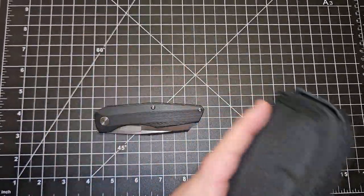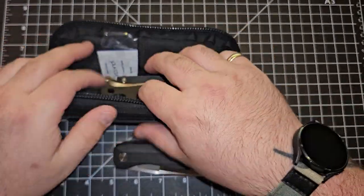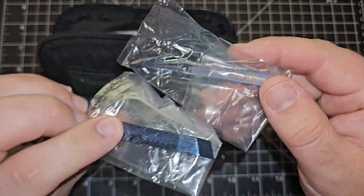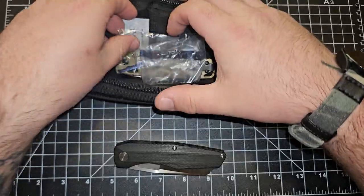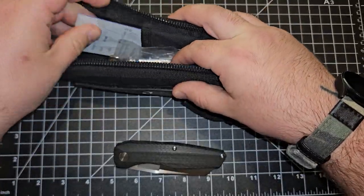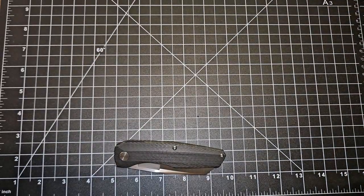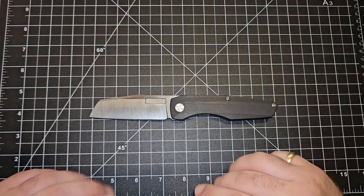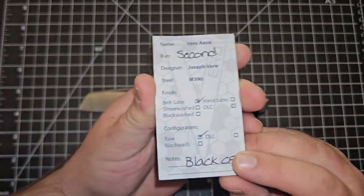So real quick, comes in this awesome pouch. I do have some Timascus backspacers and belt clip for it, so I'm gonna have to put those on. Most of them come in a Vero Engineering pouch, and this is the Vero Axon frame lock.